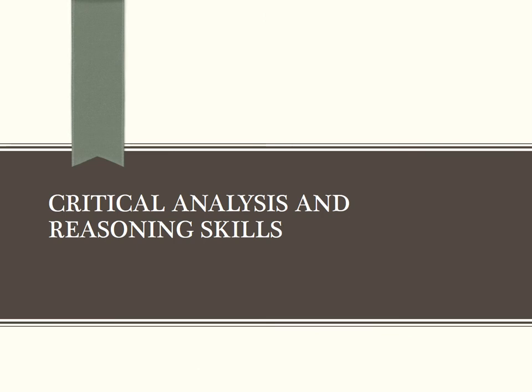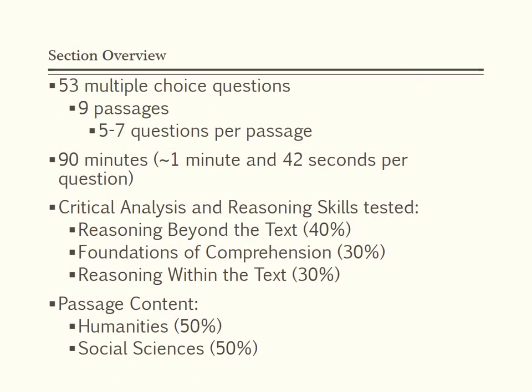The Critical Analysis and Reasoning Skills (CARS) section asks you to read and think about passages from a wide range of disciplines in the social sciences and humanities, followed by questions that lead you through comprehending, analyzing, and reasoning about the material. Typically there are 9 passages with about 1 minute and 42 seconds per question. It is a good idea to practice giving yourself 9 minutes per passage with an extra 9-minute fudge room. The skills tested and passage types are shared in order of frequency to help you make your study plan — build your weaker areas that are more prevalent.